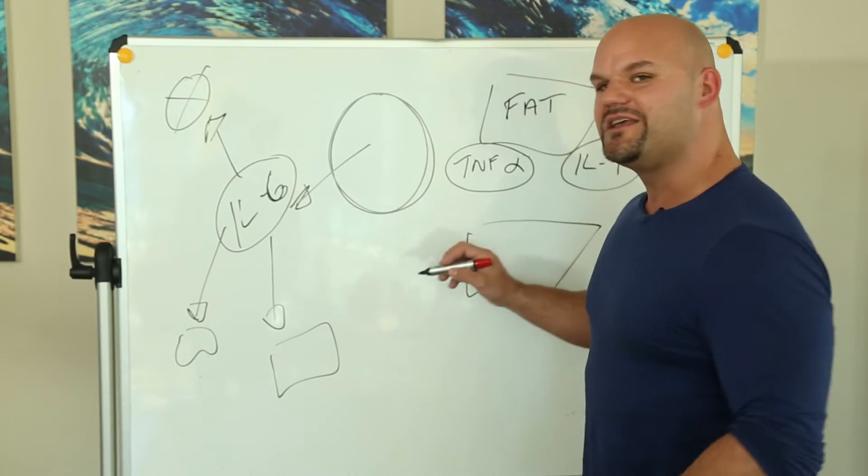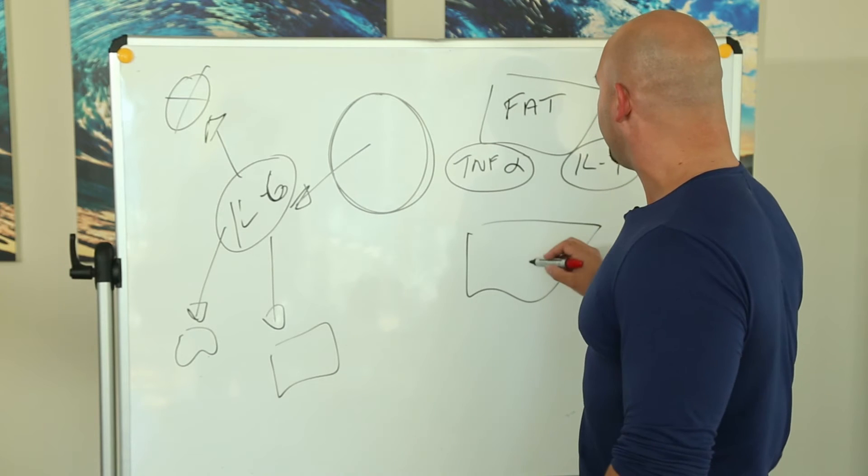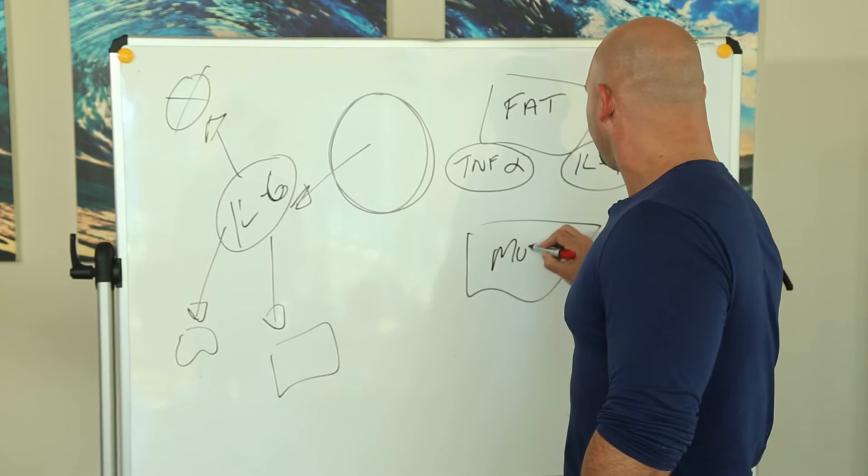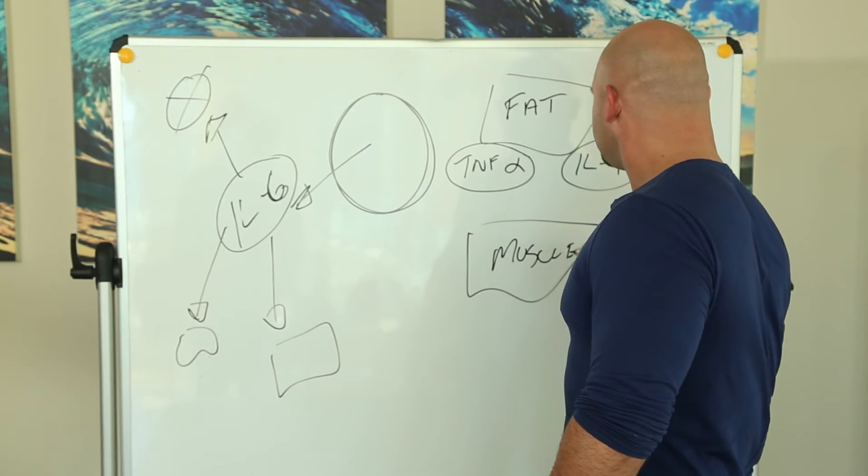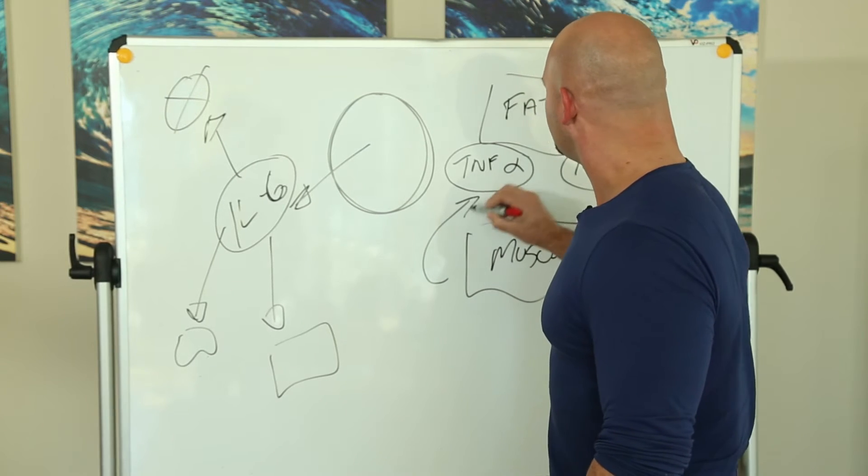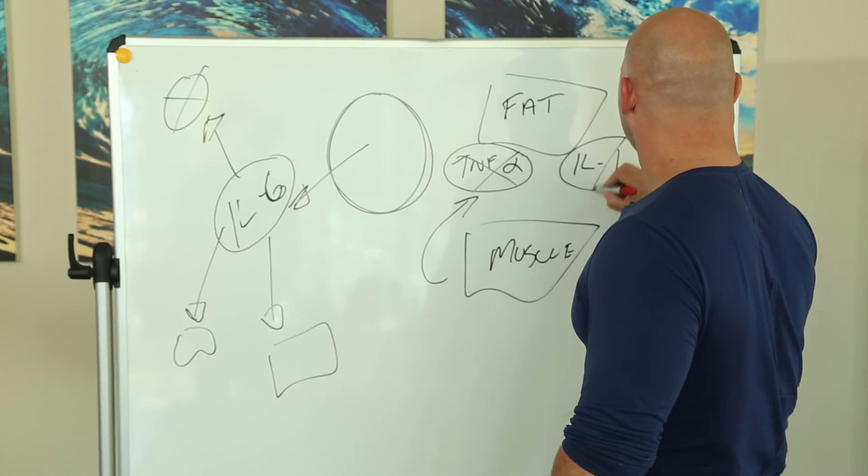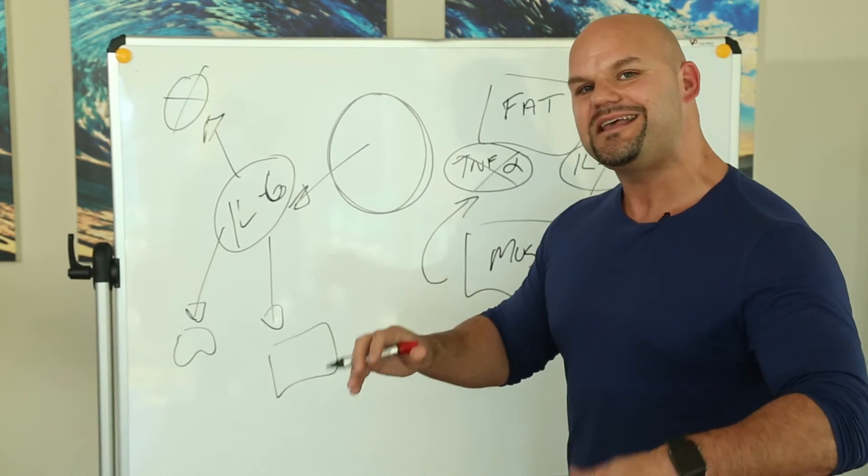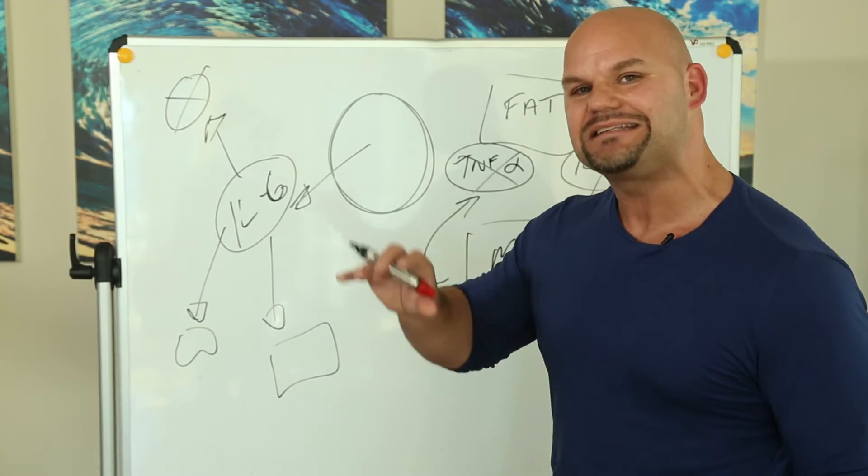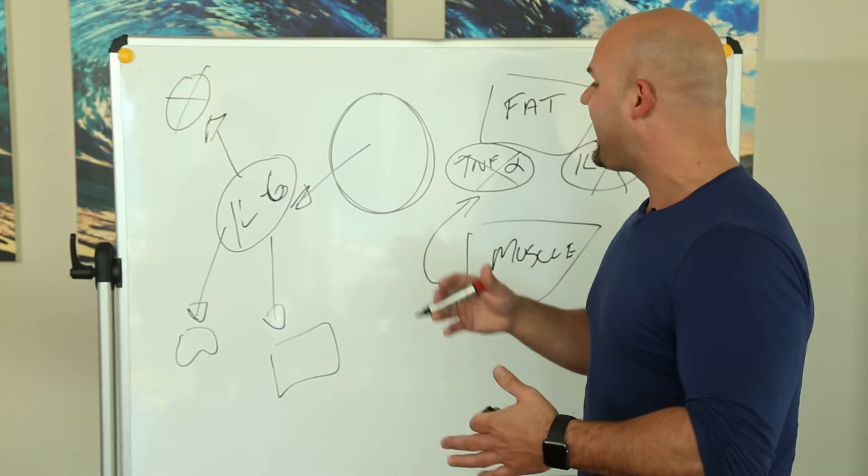The muscle is your way to circumvent this. When you contract muscle and you release IL-6, what happens is it shuts off TNF alpha and IL-1 beta. This is how exercise is anti-inflammatory and anti-aging.